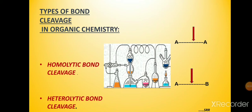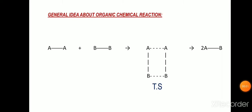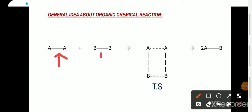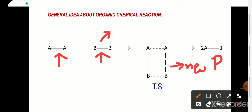In this video we will study the very basic concept of organic chemistry, that is bond cleavage. It is also called bond fission or bond breaking, and they are of two types: homolytic bond cleavage and heterolytic bond cleavage. The knowledge about bond cleavage is very important to understand any organic reaction mechanism, where some old bonds are broken and some new bonds are formed, and finally the reaction ends up into the product.